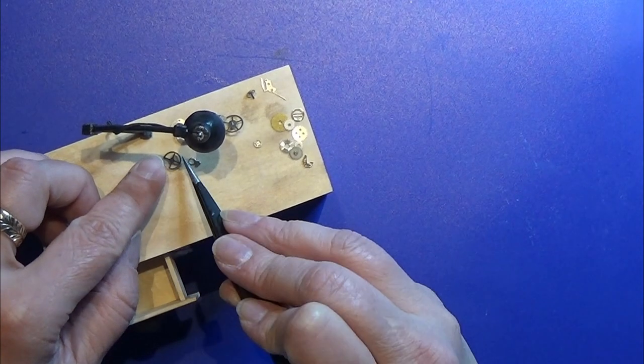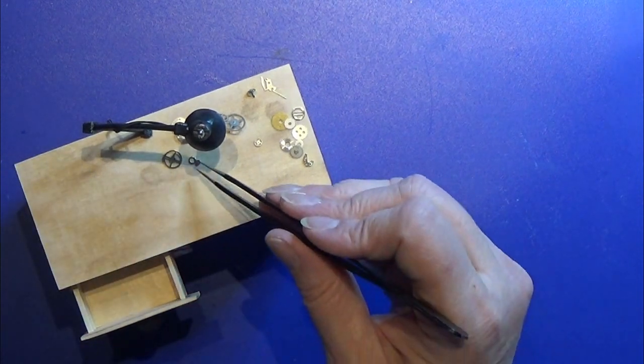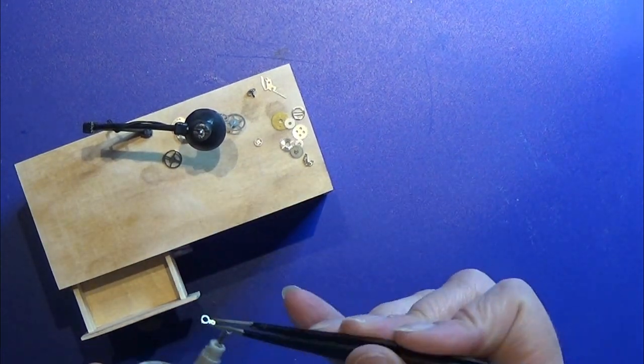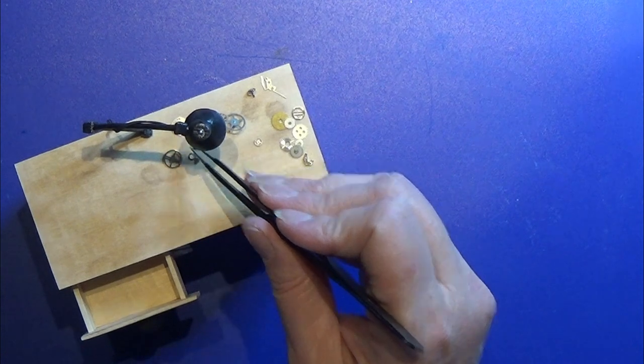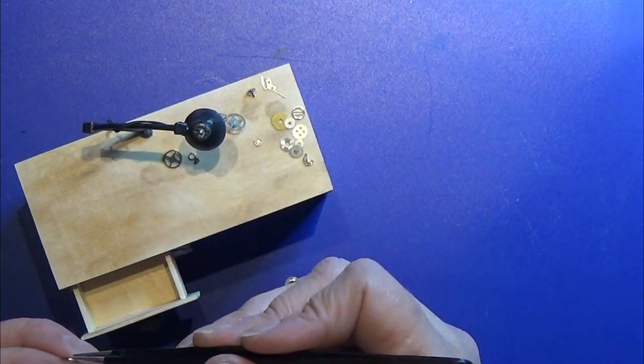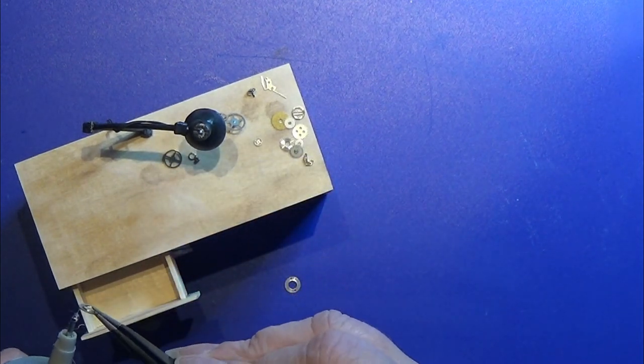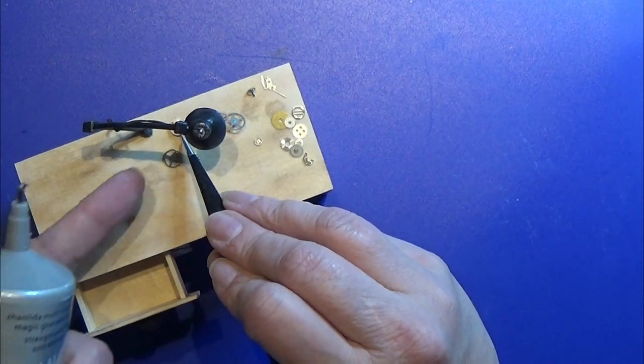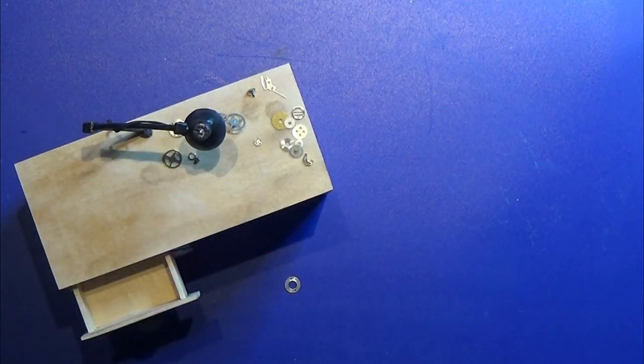On eBay I found a place where I could get a lot of these small gears for wrist watches and they were not that expensive. I'm going to glue a few of these on the table top as if the watchmaker is working on something.